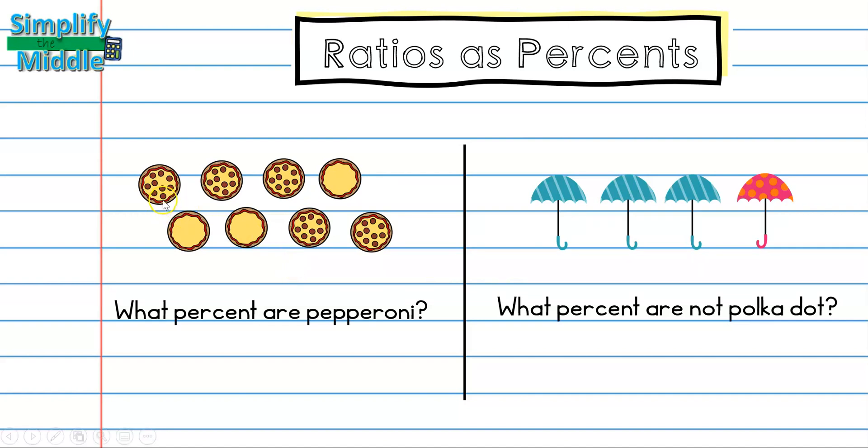So I count my pepperoni and I see I have 1, 2, 3, 4, 5 out of a total of 8, so that's five-eighths. I'll convert five-eighths into a decimal and then I'll convert that into a percent. So I should have gotten 62 and a half percent.